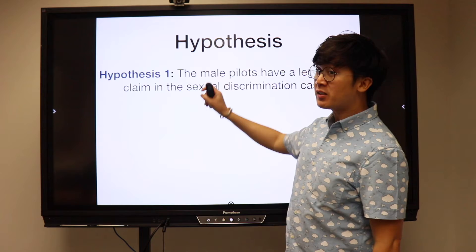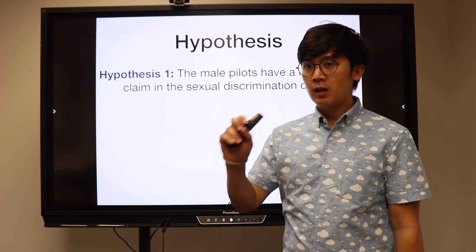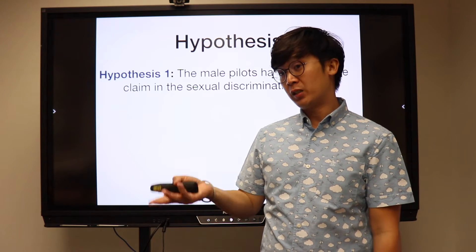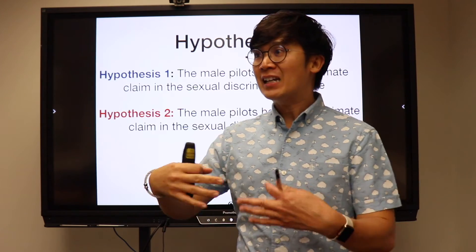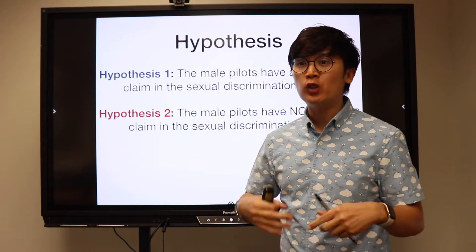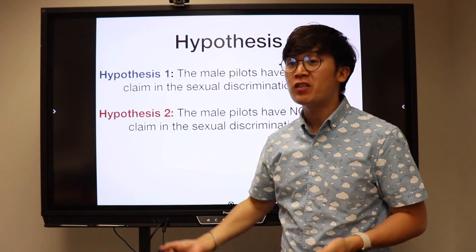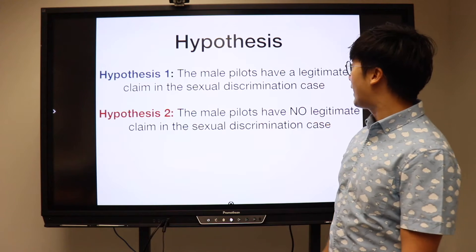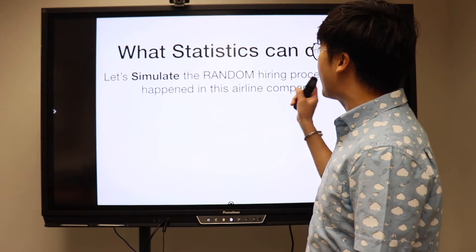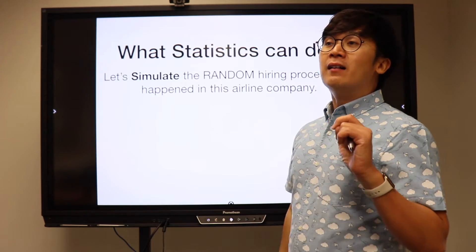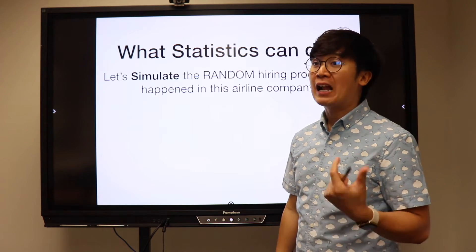Hypothesis one: the male pilots have a legitimate claim in the sexual discrimination case. What do you think hypothesis number two is? They don't have a legitimate claim. And that's how we write hypotheses in mathematics — it's always going to be a complement of another claim. This one: they have a legitimate claim. This one: they have no legitimate claim. And to do that, we're going to be simulating this random hiring scenario using our calculator.